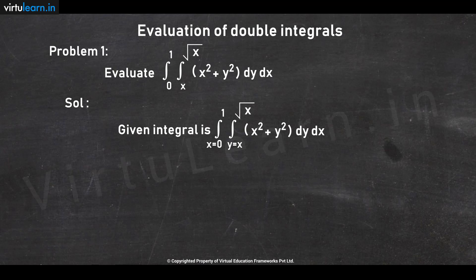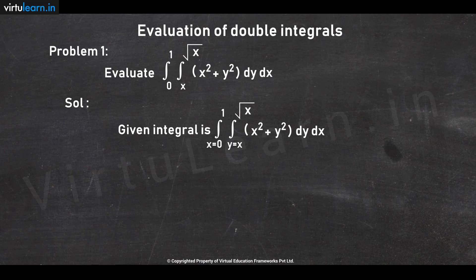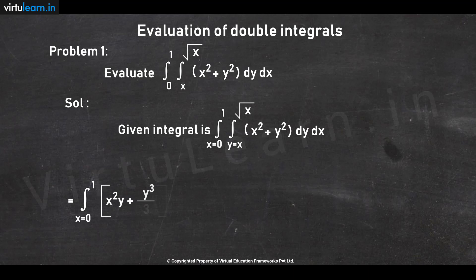While integrating with respect to y, we treat x as a constant. The given integral is ∫₀¹ ∫ₓ^√x (x² + y²) dy dx. Initially we integrate with respect to y to get ∫₀¹ [x²y + y³/3] evaluated at y = x and y = √x, then dx.